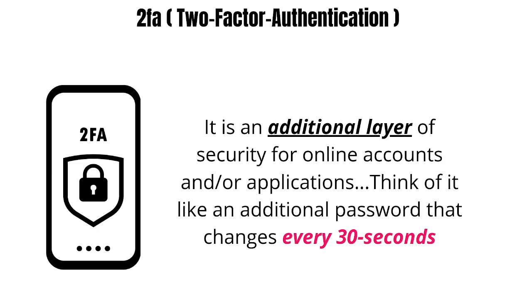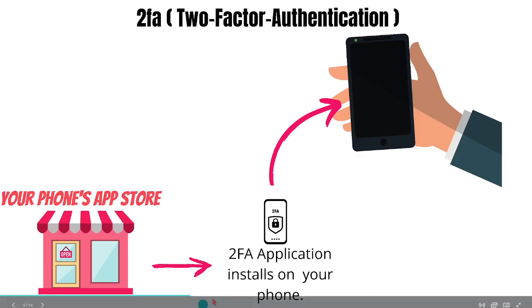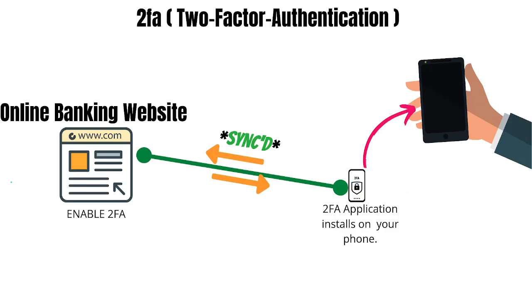So where exactly do you get 2FA? There are two steps. One: download and install a 2FA application on your phone via your app store. Two: enable the 2FA feature on the site you wish to sync the app with. Quick note — on any website or application that supports 2FA, it is always disabled by default, so you will need to enable it.